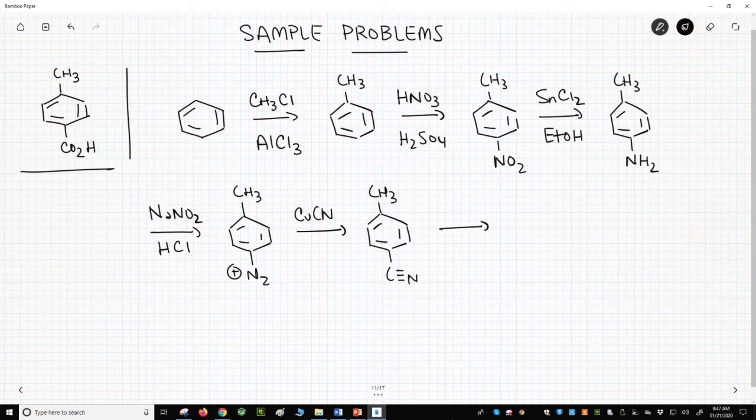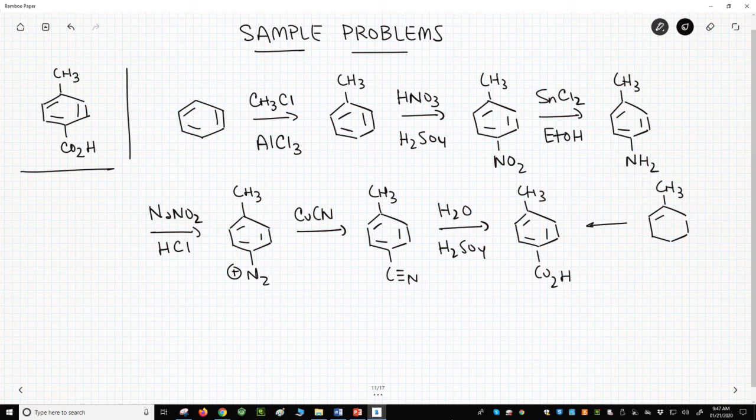Lastly, we'll treat this with water and some acid to get the carboxylic acid. So this would work fine. Now, there's a completely valid option that we could have also done. What if we instead had the bromide? We could make the Grignard,